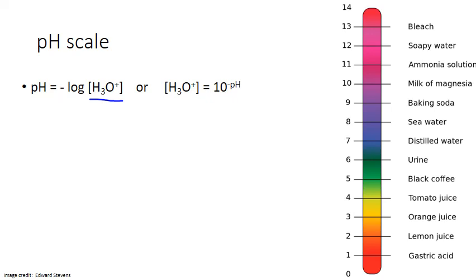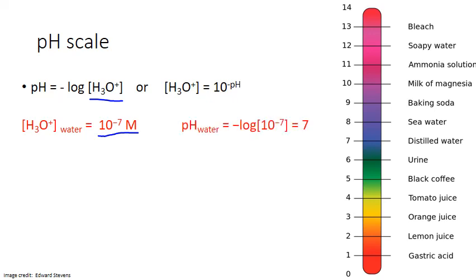In pure water, the hydronium ion concentration is 10 to the negative 7 moles per liter — that's 0.0000001, with six zeros between the decimal place and the 1. If we take the negative log of that concentration to get the pH, it returns the exponent value of 7 as a positive, so we get a pH of 7.